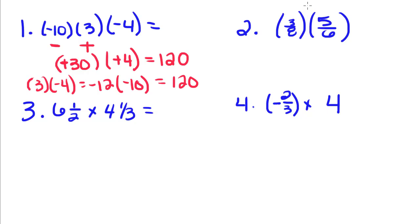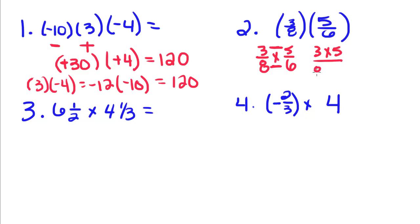Here we have 3/8 multiplied by 5/6. When we multiply fractions, we multiply across the top and across the bottom. So on the top we have 3 times 5, and on the bottom 8 times 6. So 3 times 5 is 15, and 8 times 6 is 48, giving us positive 15/48.